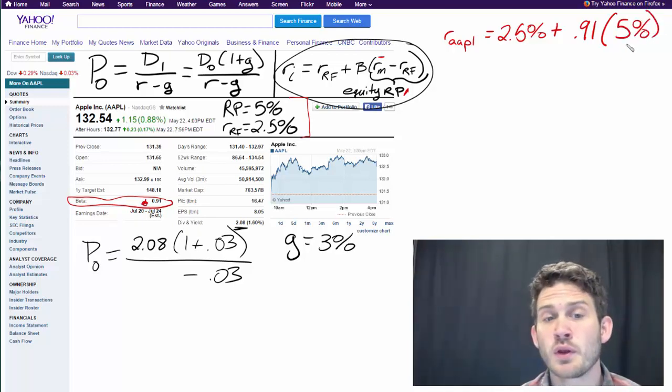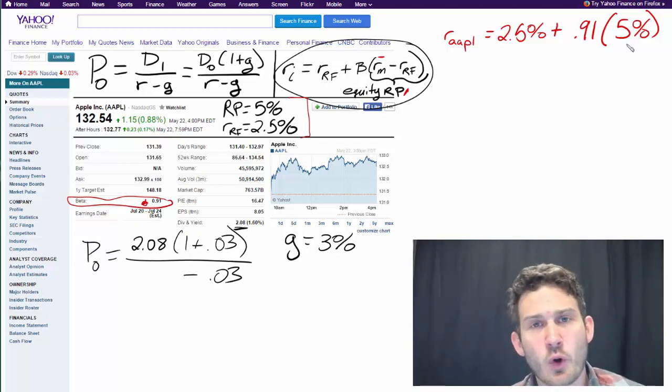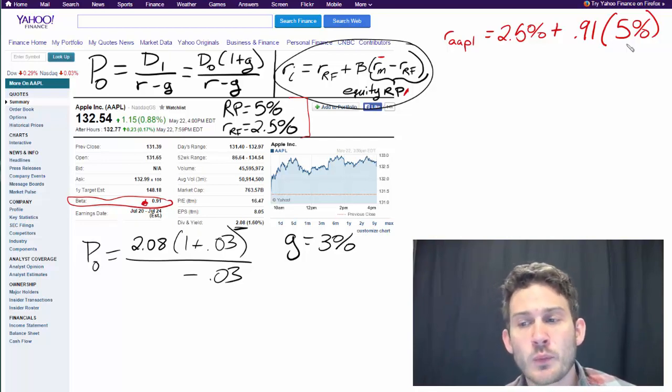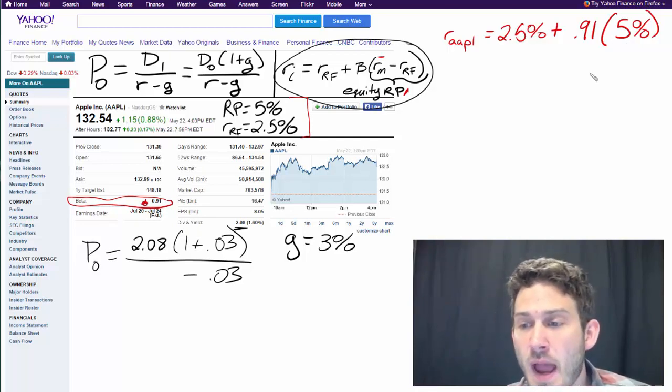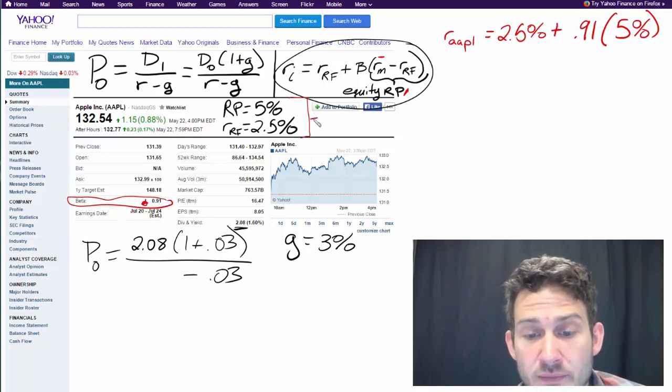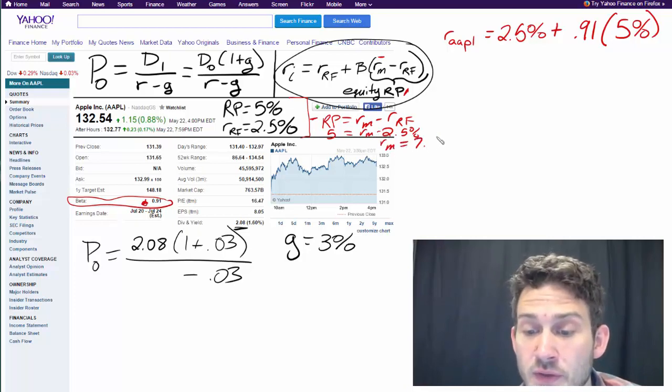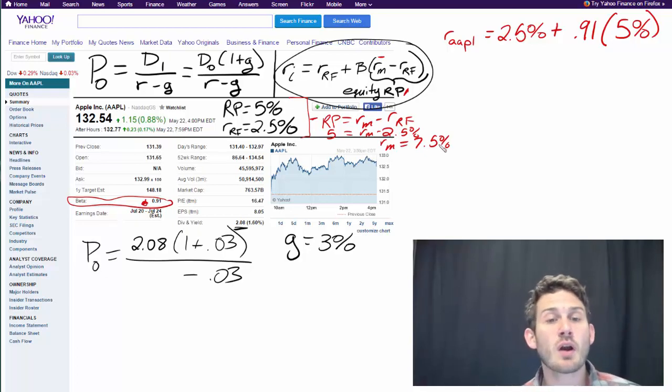That's given by a risk free rate of 2.5% plus our beta, which is 0.91, and that's multiplied by our risk premium, which is 5%. Just a general question for you: is this going to have a higher, lower, or about the same required return as holding the overall market? Keep in mind that the risk premium is equal to the return of the market minus the risk free rate. If our risk premium is 5% and our risk free rate is 2.5%, then the return on the market is 7.5%.